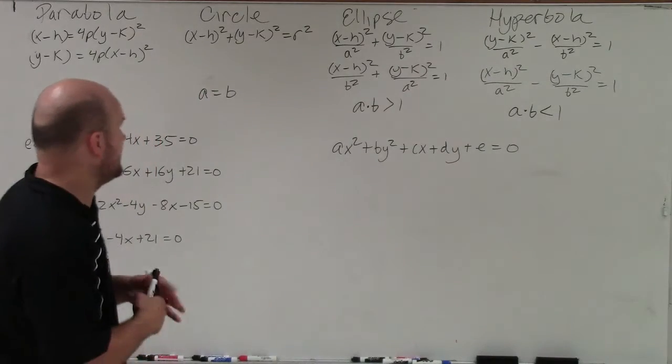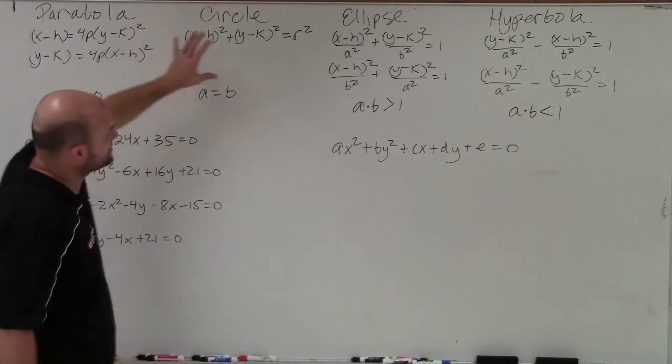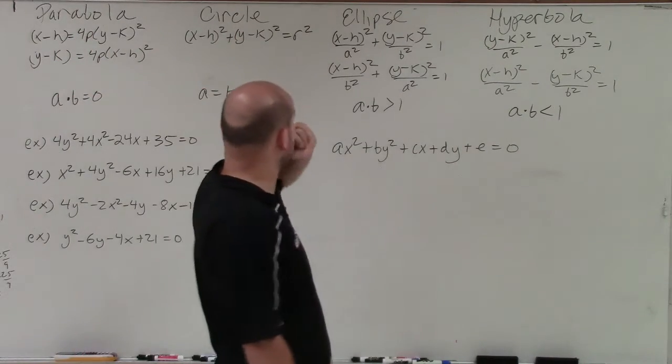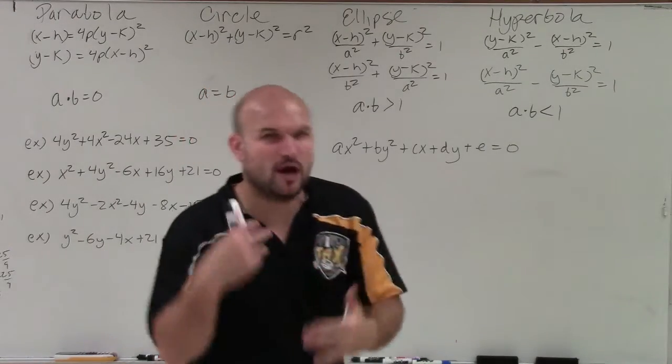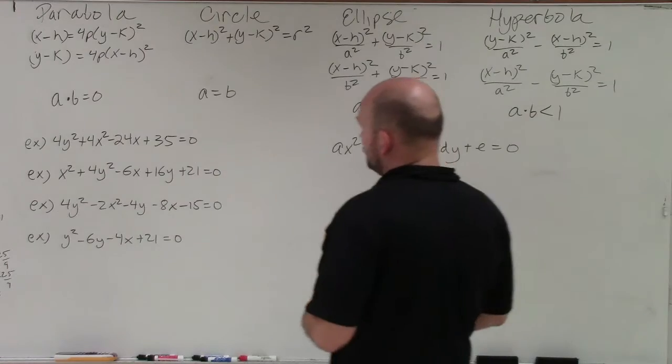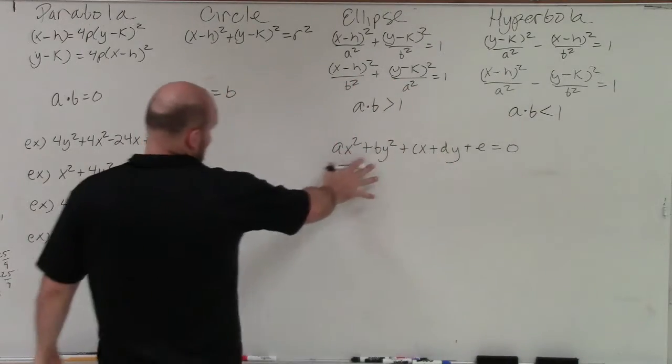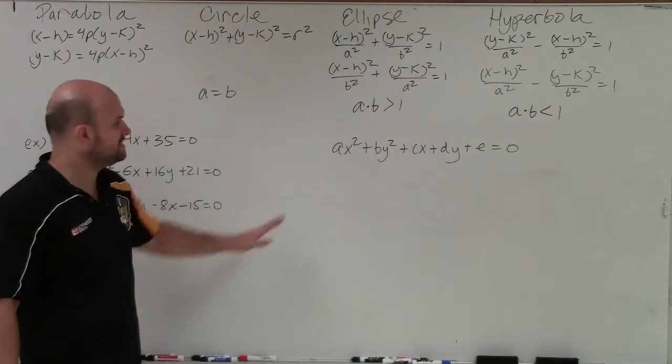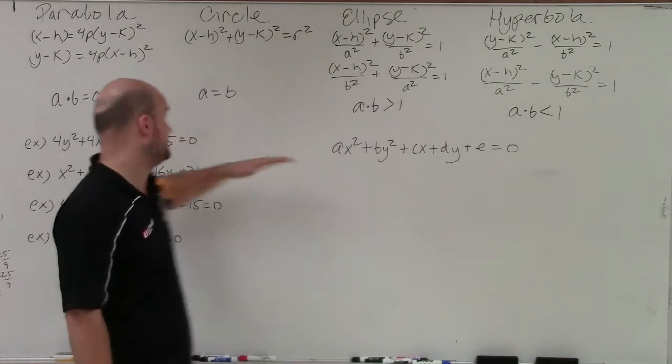And what we did is I kind of also then wrote in the common equations that we use for a parabola, a circle, an ellipse, and hyperbola to kind of help me as I'm explaining things. But basically, what the purpose comes into is if you have an equation that's in this format, and what you notice is a times b, if you multiply those, you're going to get 0.